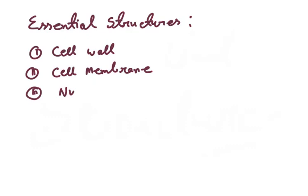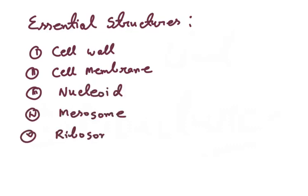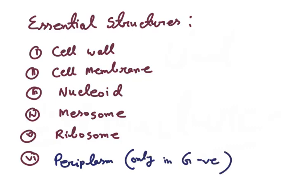There are six essential structures: first of all cell wall, after that plasma membrane, nucleoid, ribosome, mesosome, and periplasmic space only in case of gram-negative bacteria.